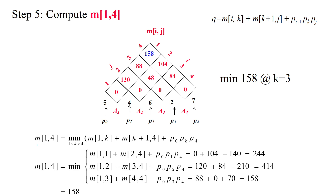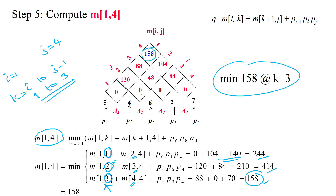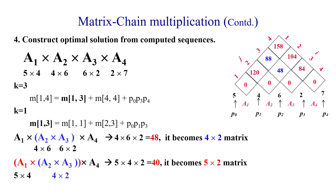Now we find m[1,4] with i=1, j=4. k ranges from 1 to j−1=3, giving three iterations: k=1, k=2, k=3. Substituting the values gives three different scalar multiplication counts. Among these, 158 is the minimum at k=3. So m[1,4] = 158.